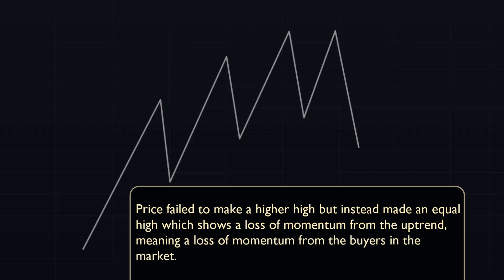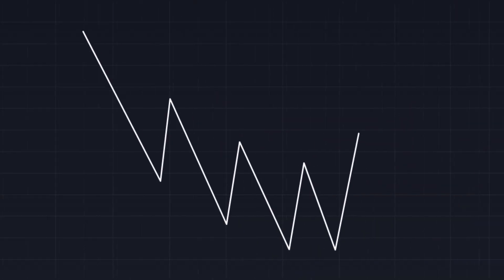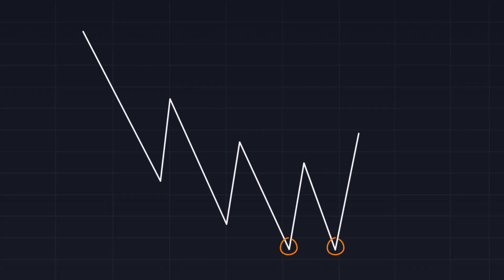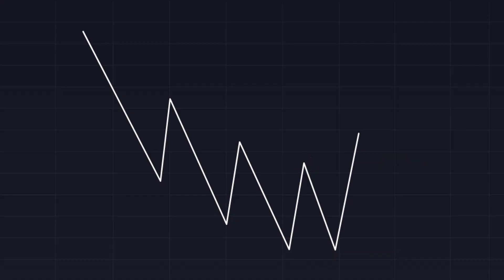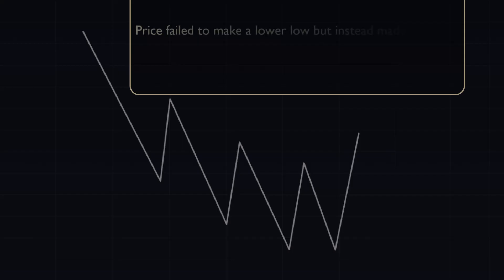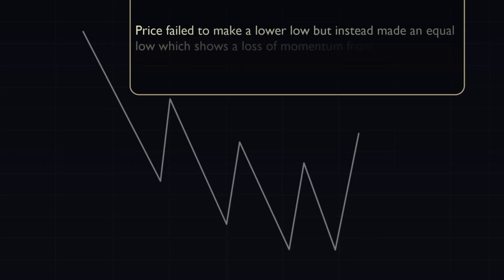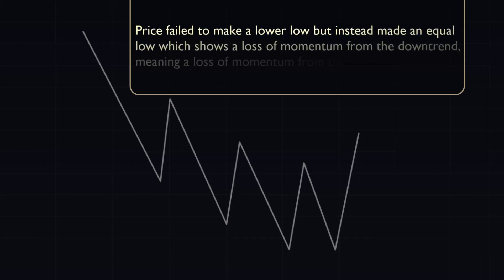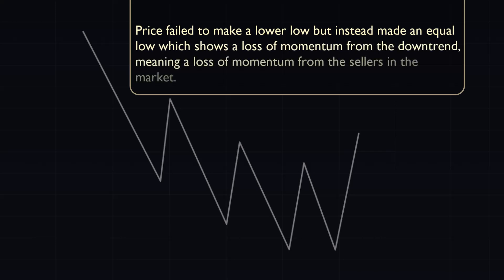Moving on to the double bottom. The double bottom is formed when you have a moving downtrend. Price then makes two equal lows. The bottoms essentially make a support level. This swing high here forms the neckline. The double bottom tells us that price failed to make a lower low, but instead made an equal low, which shows a loss of momentum from the downtrend, meaning a loss of momentum from the sellers in the market.